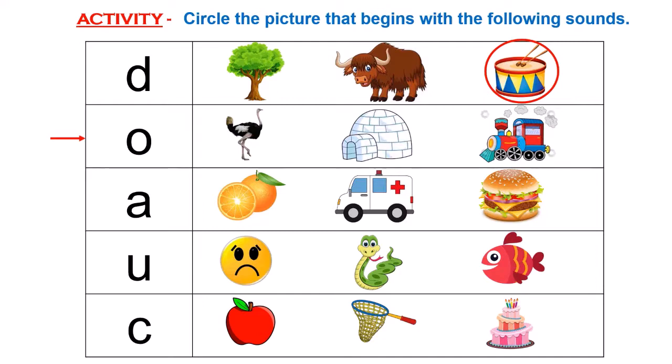Come, let us take a look at the pictures. The first picture is that of an Ostrich. Then is an Igloo. And the last picture is that of an Engine. So, we have Ostrich, Igloo, Engine. Can you guess which picture begins with the sound of Awe? Superb! Very good! Ostrich begins with the sound Awe. Ostrich.